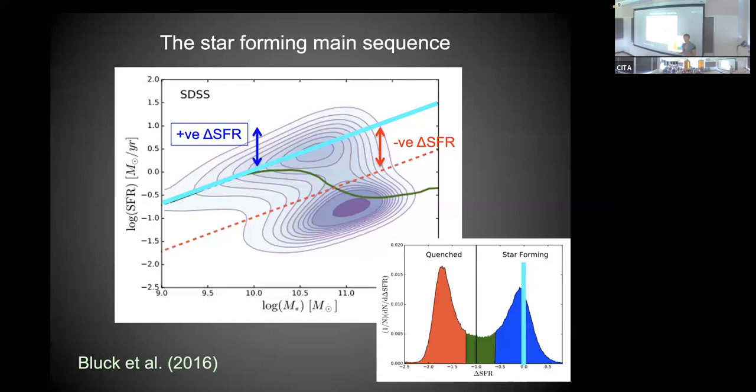Once again, you can see galaxies organizing themselves into two broad populations. This time, the red galaxies are on the bottom - they have low star formation rates for their stellar masses. Most disk galaxies are up here, where they have relatively high star formation rates for their stellar masses. When we plot it like this, we change the nomenclature from a color-based system to one referring to star formation properties.